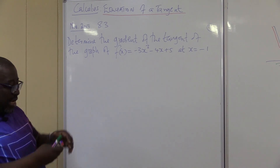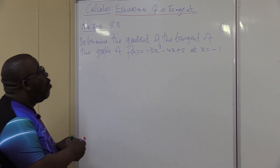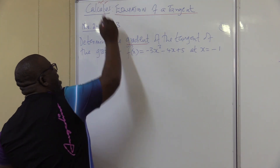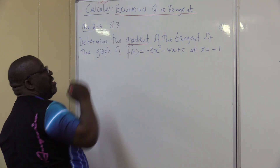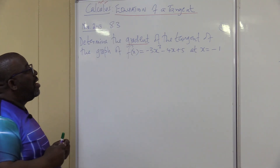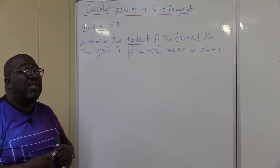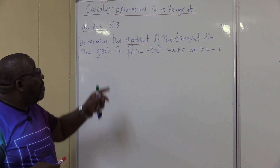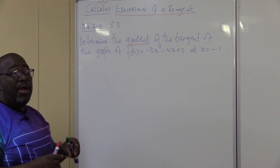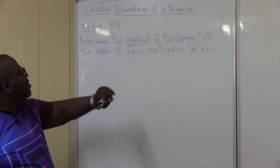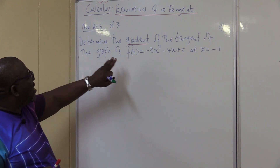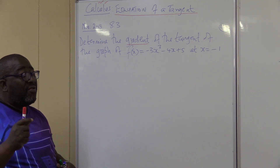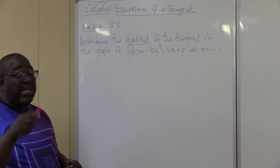Determine the gradient — we know what we're looking for. We're looking for the gradient. At times it might not be the gradient; it might be the whole equation, which is why it's called Mx plus C. Determine the gradient of the tangent. We know that we're looking for the gradient of a tangent.